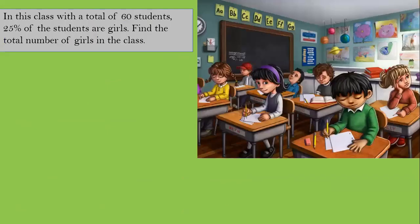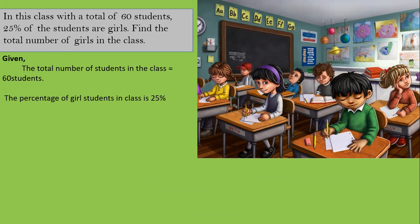In a class with a total of 60 students, 25 percent of the students are girls. Find the total number of girls in the class. It is given that the total number of students is 60 and 25 percent of those students are girls. We have to find the total number of girls.